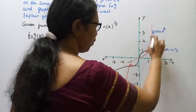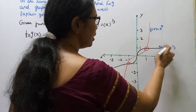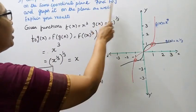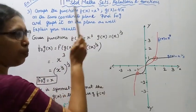Then f(x) and the graph is like this, and g(x) is like this. Now we need to find f∘g and graph it on the plane.